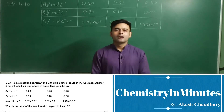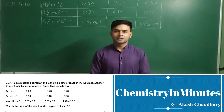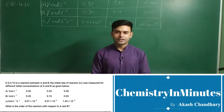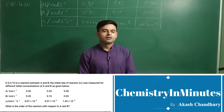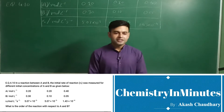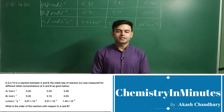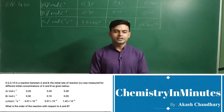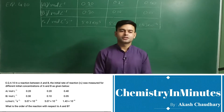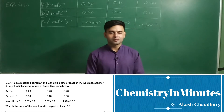Hello my dear students. Welcome to Chemistry in Minutes. The question now appearing on your screen is exercise question 4.10. The question is: in a reaction between A and B, the initial rate of reaction R₀ was measured for different initial concentrations of A and B as given below.